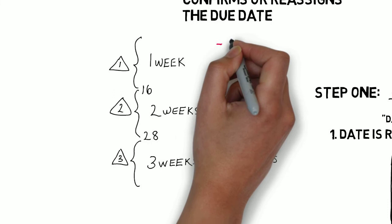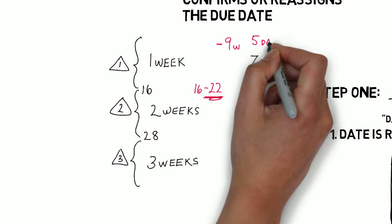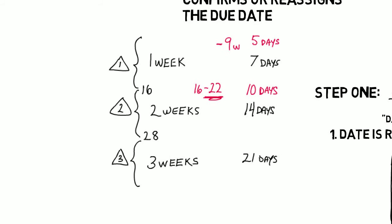So, for the first trimester, it's 5 days up to 9 weeks and then 7 days for the rest of that trimester up to 16 weeks. For the second trimester, it's 10 days up to 22 weeks and then 14 days for the rest of that trimester up to 28 weeks. The third trimester is still 21 days.